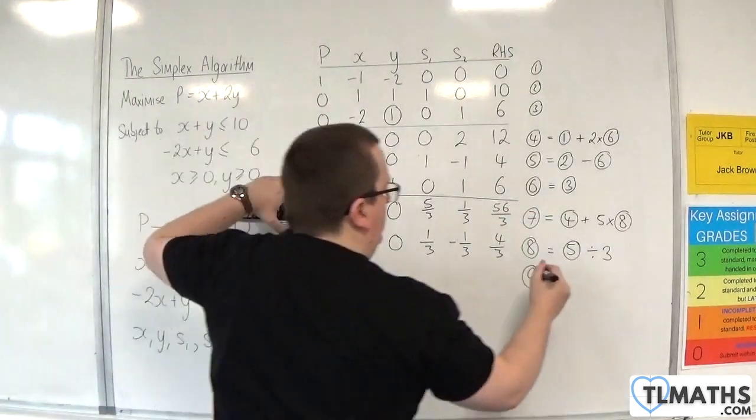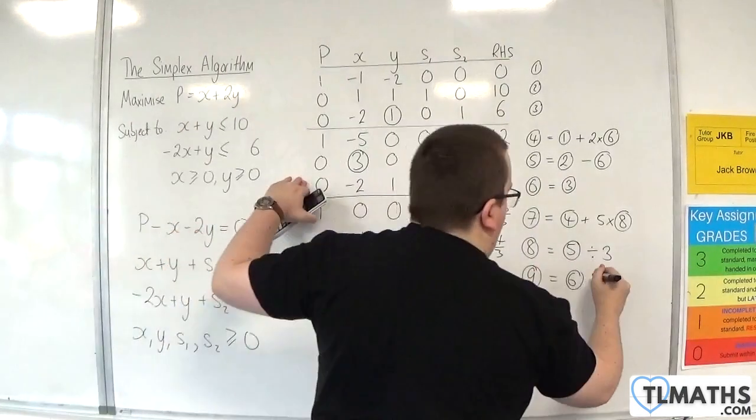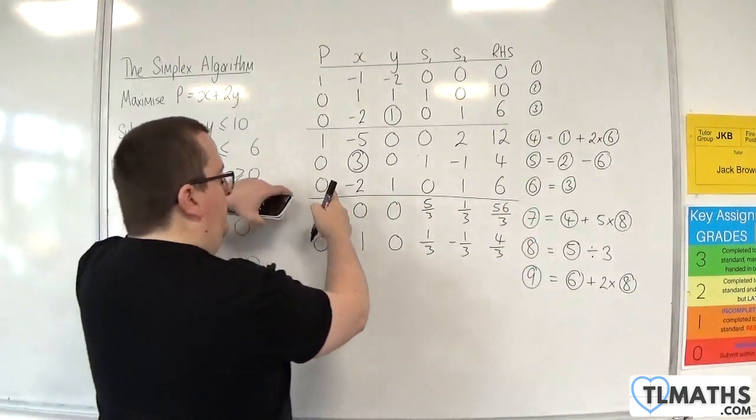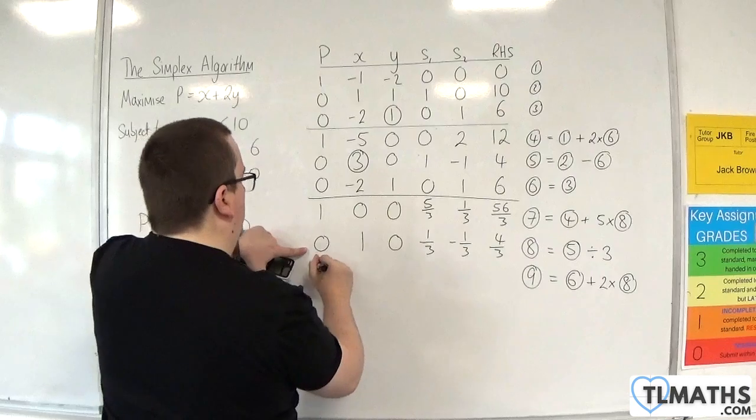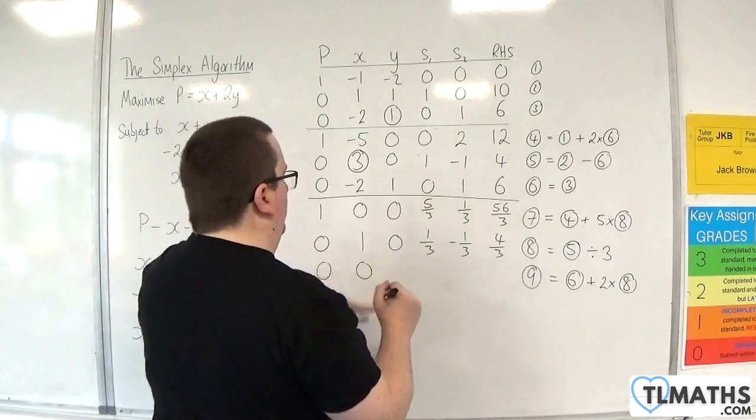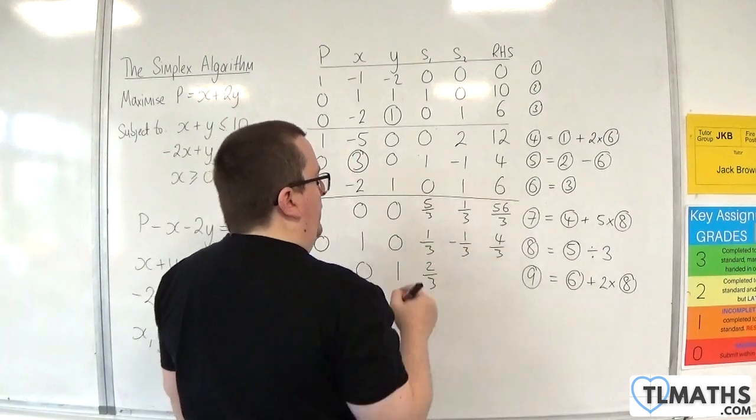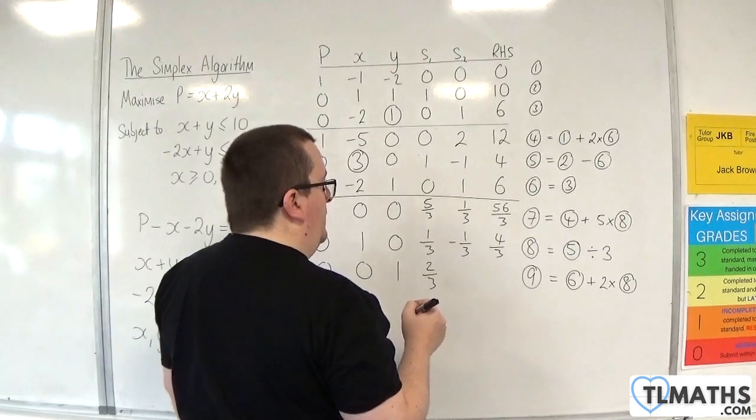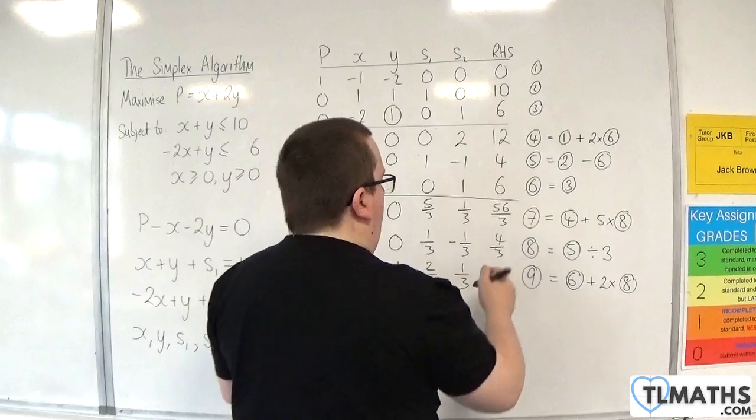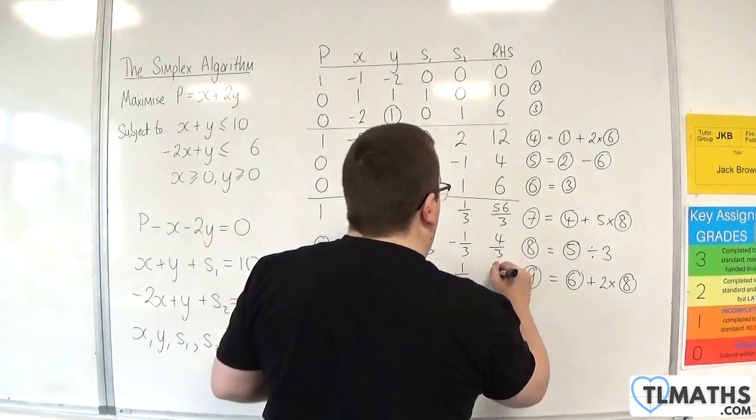For this row, I'm going to have row 6. And I'm going to need to add on 2 lots of row 8. So 0 plus 2 lots of 0. Minus 2 plus 2 lots of 1 is 0. 1 plus 2 lots of 0 is 1. 0 plus 2 lots of a third is 2 thirds. 1 plus 2 lots of minus a third is 1 take away 2 thirds, which is a third. And then 6 plus 2 lots of 4 thirds is 26 thirds.